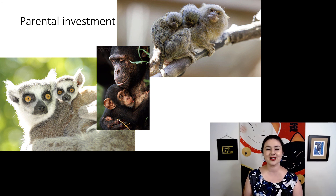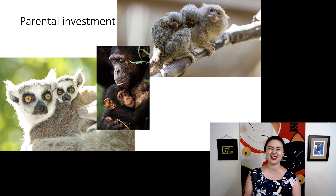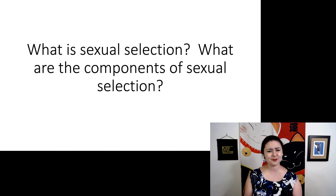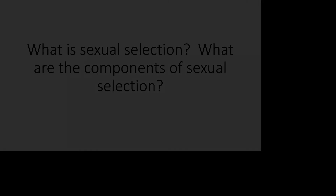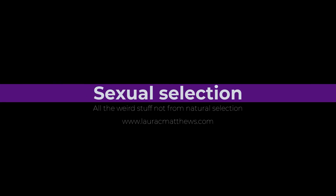Here we can see our pygmy marmosets, chimpanzees, and our ring-tailed lemur. So, what is sexual selection, and what are the different components within it?